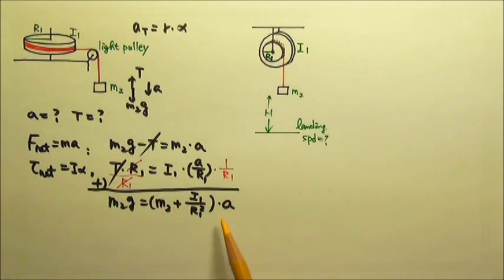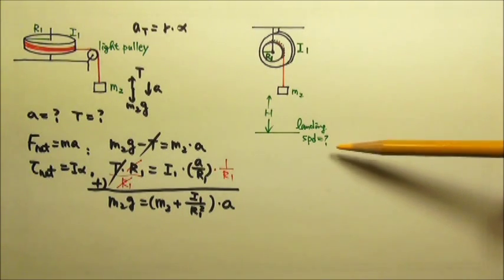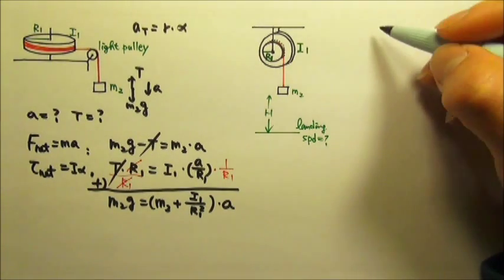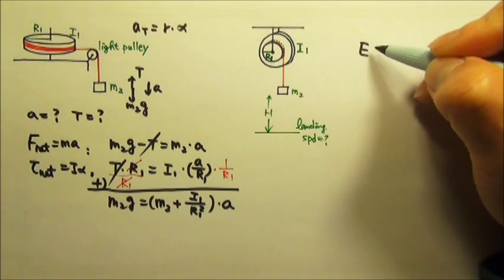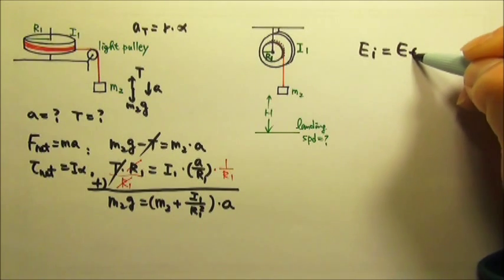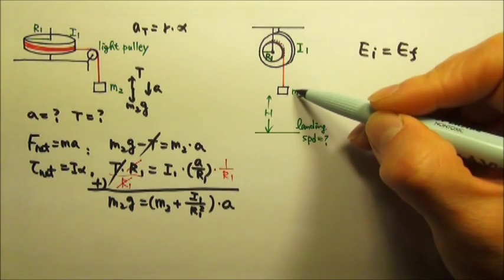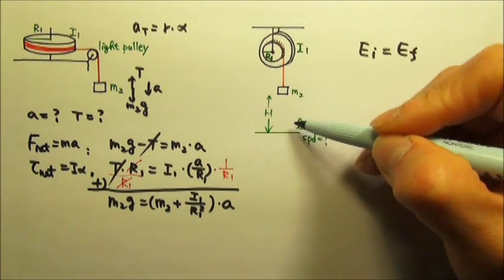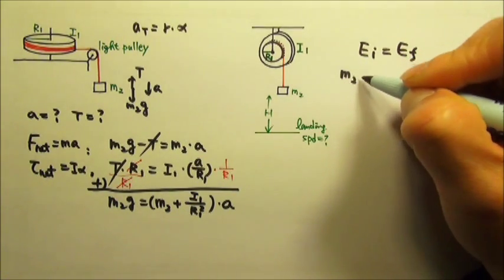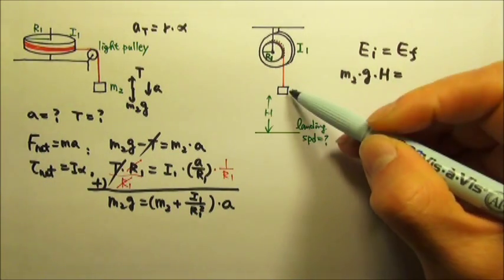Or without the acceleration, we can use conservation of energy to find the landing speed. If the system does not lose any energy to friction or air resistance, then the total mechanical energy before and after will be equal. The total mechanical energy before is M2 times G times H.